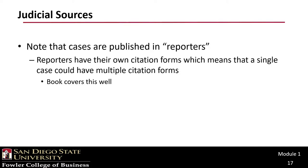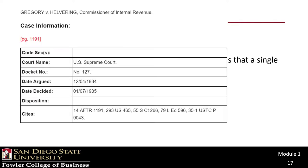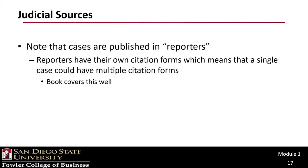There is no code of judicial decisions. Instead, each case is reported separately into a bound volume — which, of course, are electronic today. These reporters are published by private companies, and as a result, a single case could be reported in multiple reporters and therefore have multiple citation forms. The book does a good job of describing these, so I'm not going to cover them in this lecture.